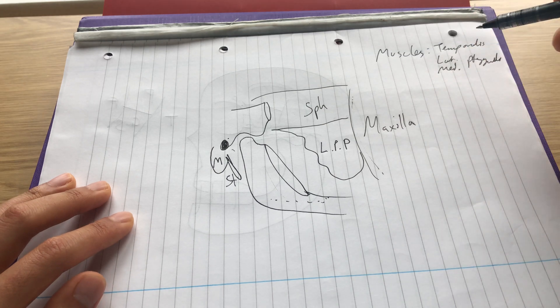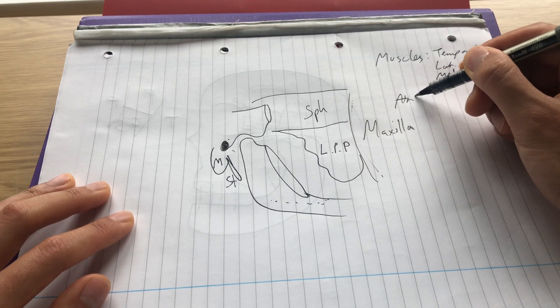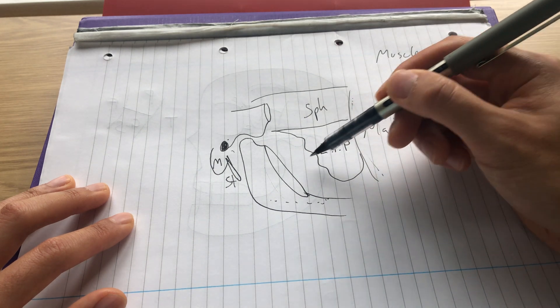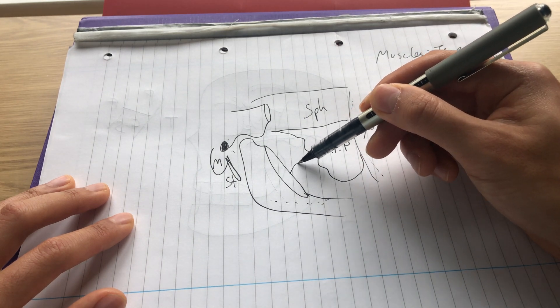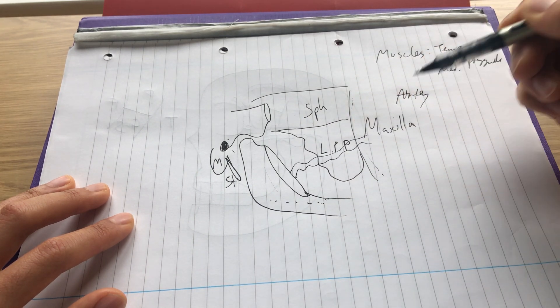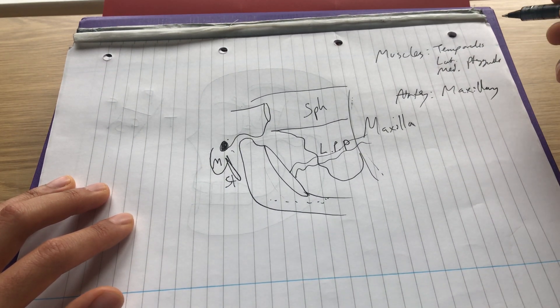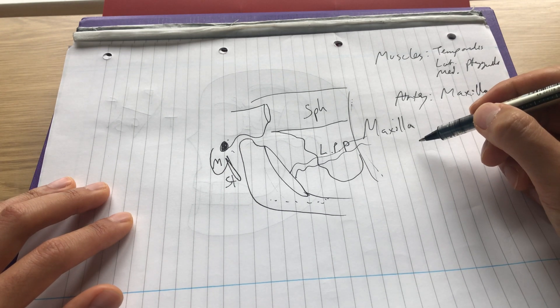The main artery running through is the maxillary artery, which runs across a little bit like this. And also all of the branches of the maxillary artery, which we won't go into today.